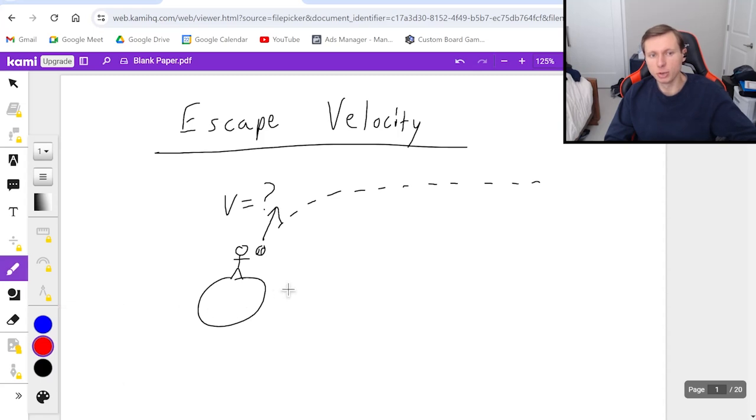So first I got to pick two points. Point one is when we're throwing the ball off the surface of the Earth and point two is when we're at a point really, really, really far away from Earth.